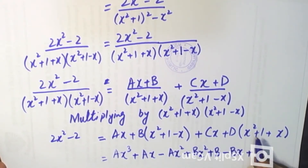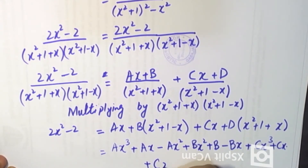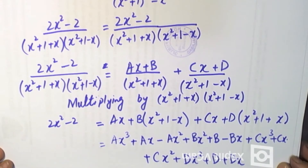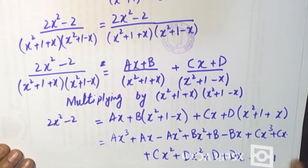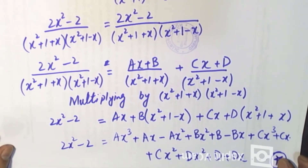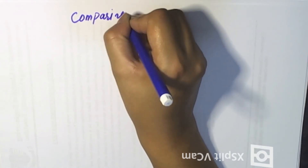Is tarike se C, X ko multiply karein. Isko ab multiply karein. Ab koi bhi equation jo hai usko naam de lete hain — isko main naam de raha hoon, equation jo hai woh star ka naam de liya. Ab hamare paas equation star hai. Isko hum comparing coefficients kar lenge, A, B, C, D ki values find karne ke liye. Yeh bahut hi easy method hai. Is tarike se aap yeh kar sakte hain — comparing coefficients.